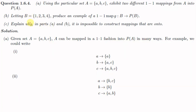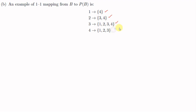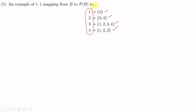For Part B, given B equal to {1, 2, 3, 4}, we produce a one-one map G from B to P(B). An example is: 1 maps to {4}, 2 maps to {3,4}, 3 maps to {1,2,3,4}, and 4 maps to {1,2,3}. This mapping is clearly one-one because all elements of B have different images in P(B).